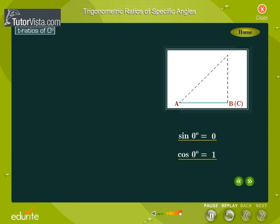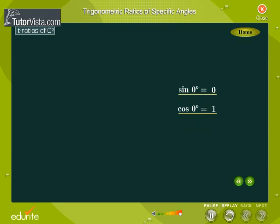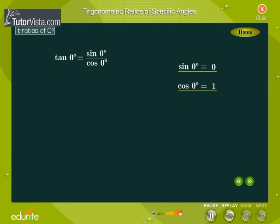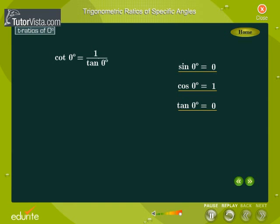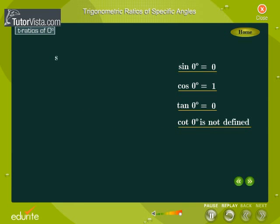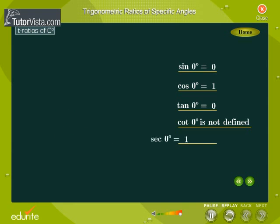Using these ratios, we can calculate the other trigonometric ratios. Cosec zero degrees is equal to 1 by sine zero degrees, which is not defined.